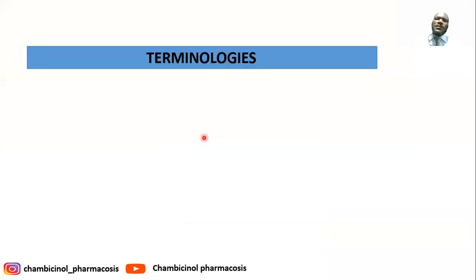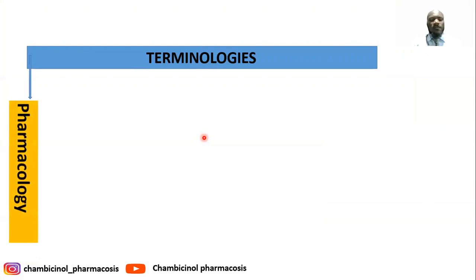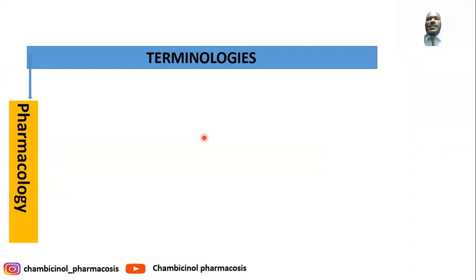Starting with the terminology, the first is pharmacology. Pharmacology is a combination of two Greek terms: pharmacon, meaning drugs, and logos, meaning study. So this is the study of drugs, or the branch of medicine which deals with the uses, effects, and mode of action of drugs.